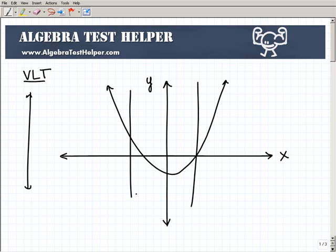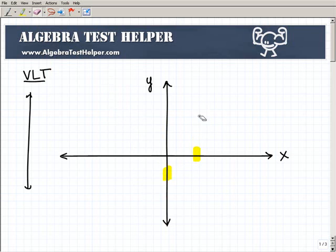And it only crosses through one point, like right here? Absolutely. So, this graph represents a function. Passes the vertical line test.